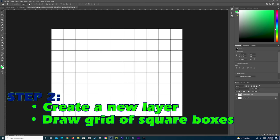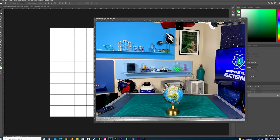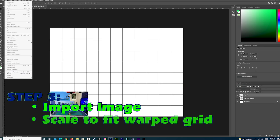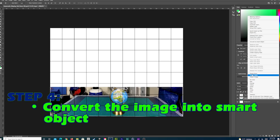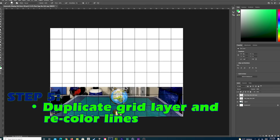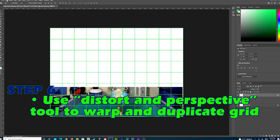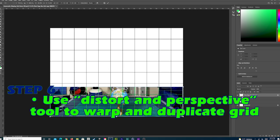Step 4, convert it into a smart object. This will allow you to warp the images without compromising quality. Step 5, duplicate that grid layer and recolor the grid lines. Step 6, now warp and duplicate the grid using the distort and perspective tool. It should look as if the grid is going into the distance. Like railroad tracks, make sure the two grids line up at the bottom of the page.